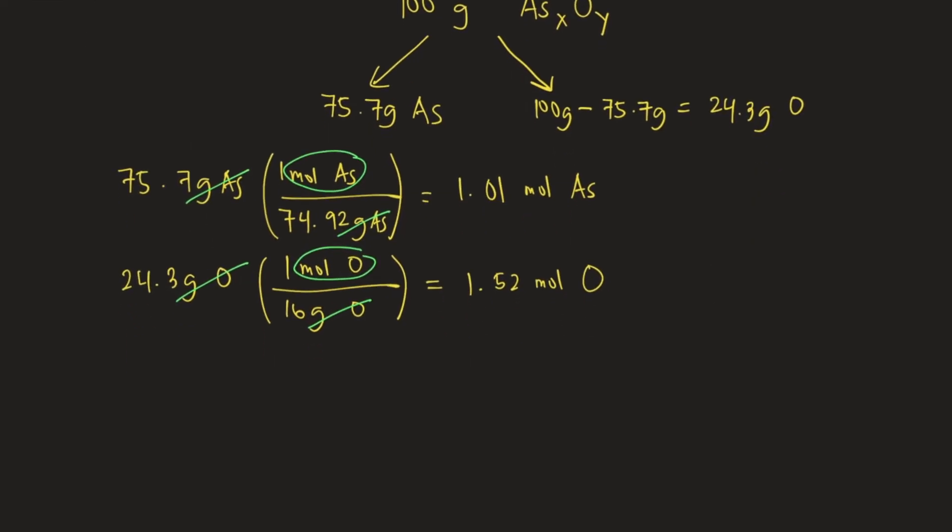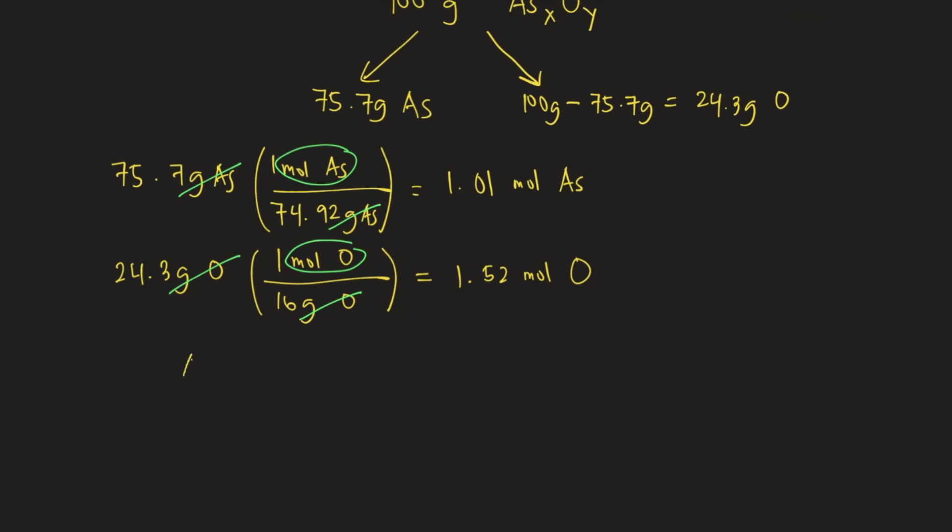Therefore, we have As 1.01 and oxygen 1.52. What we need to do is to divide the subscript by the smaller number. So between 1.01 and 1.52, 1.01 is the smaller number. So we divide the subscript by 1.01.